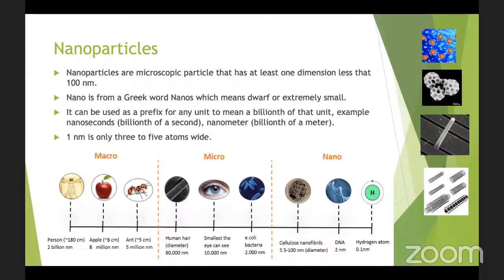Nano is basically one billionth part of a unit — like nanometer or nanosecond — which is 10 to the power minus 9 part of a meter, which is a nanometer, or one billionth part of a second, which is a nanosecond. To understand better the nanoscale, let's see a comparison between the macro, micro, and nanoscale.